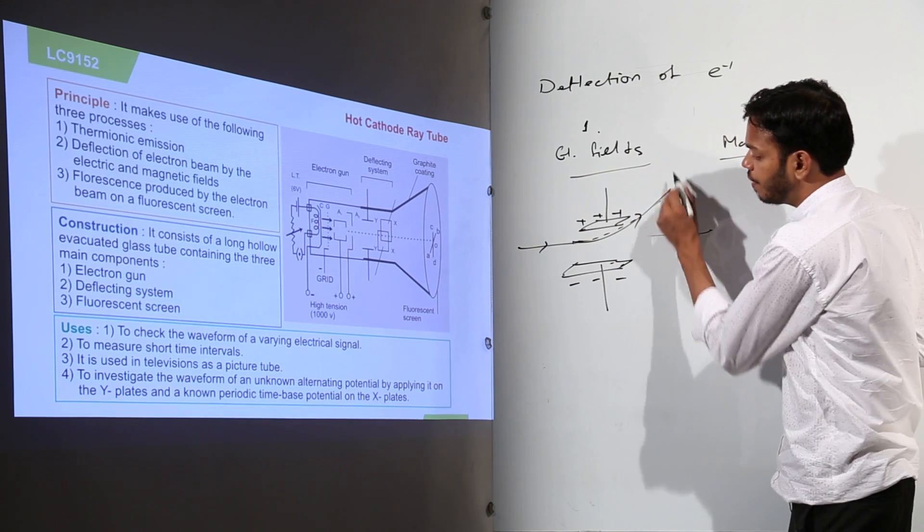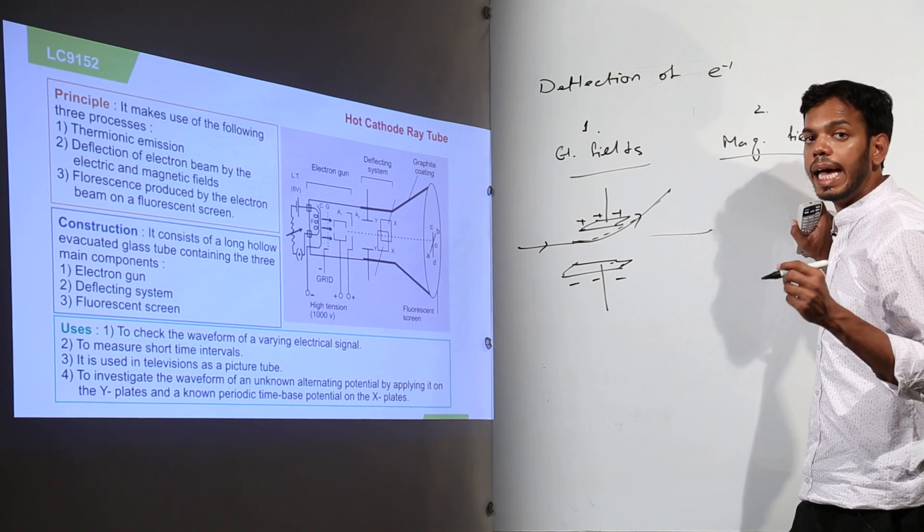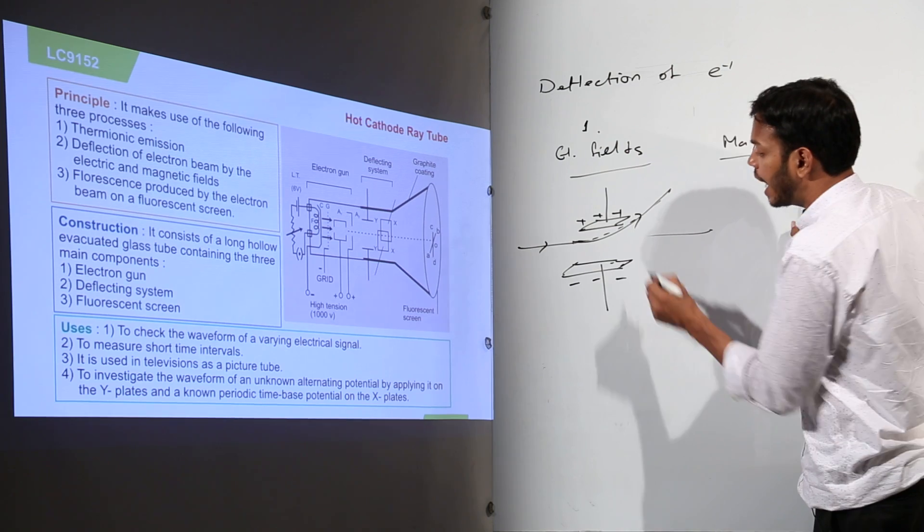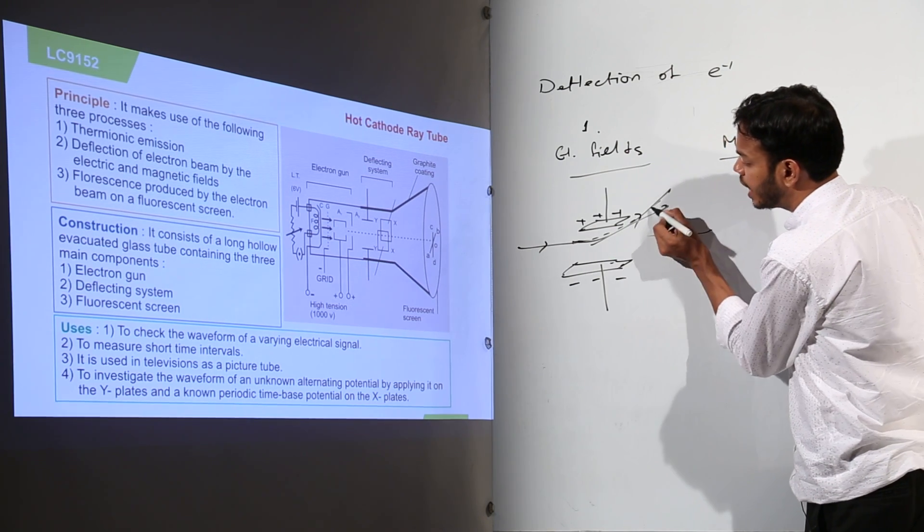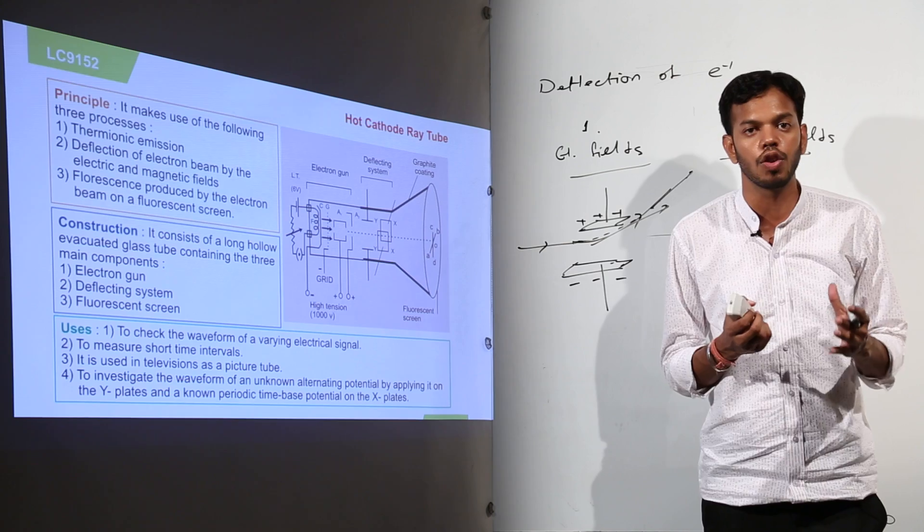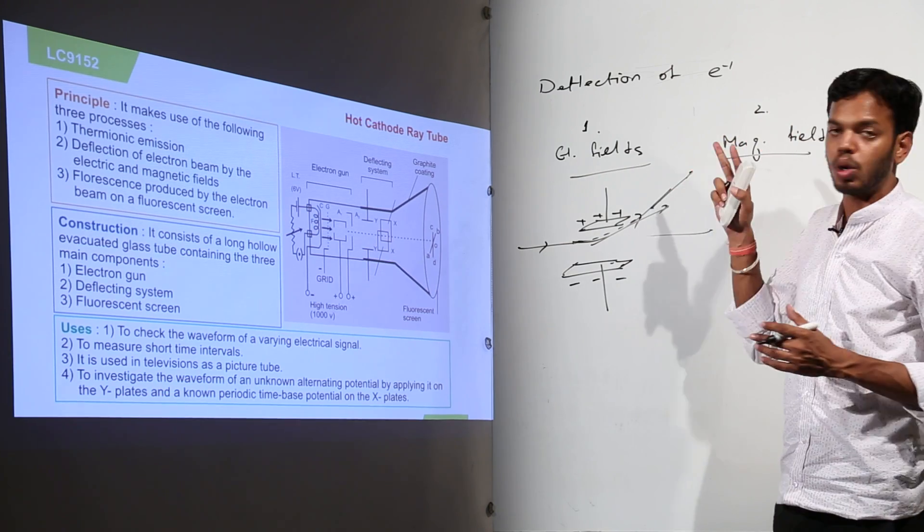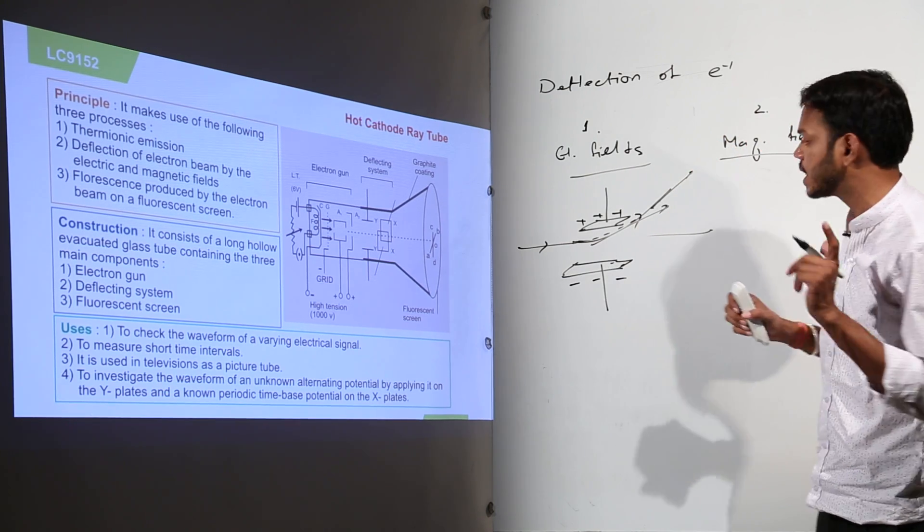So at any point on the curve, if you want to know what exactly is the direction of flow of electrons, you will have to draw a tangent at that point and that tangent is going to show you the exact direction of flow of electrons. So this is how electrons deflect in the electric fields.